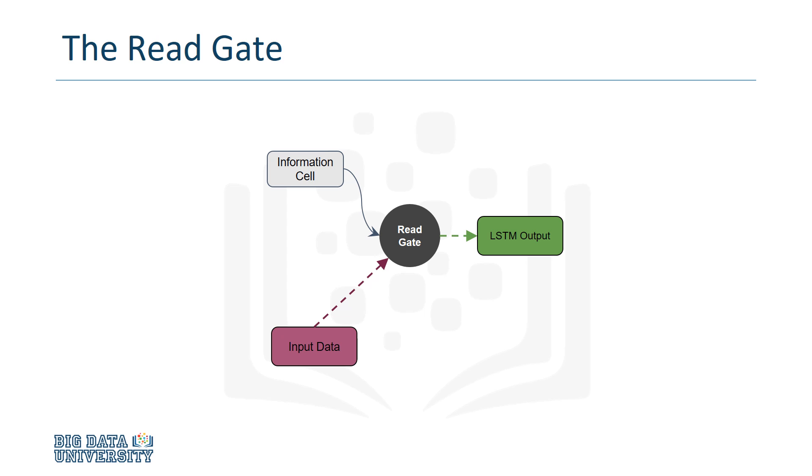Working in tandem, all three gates allow the model to freely regulate and manipulate the data inside the information cell.